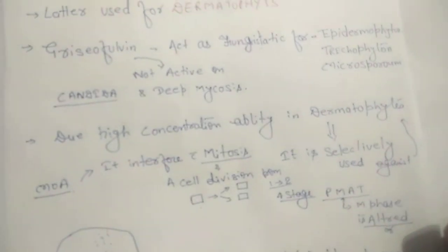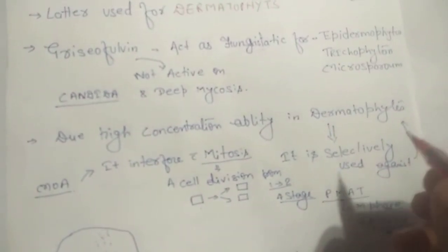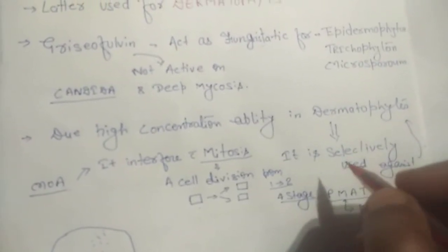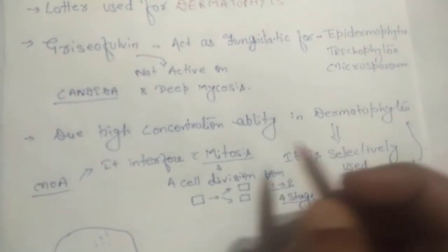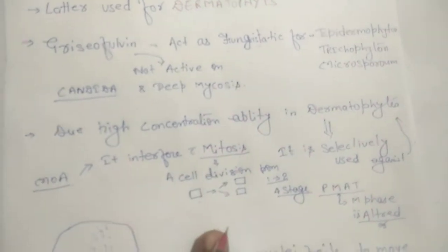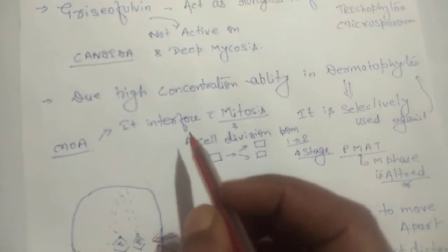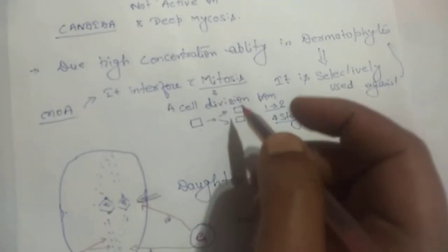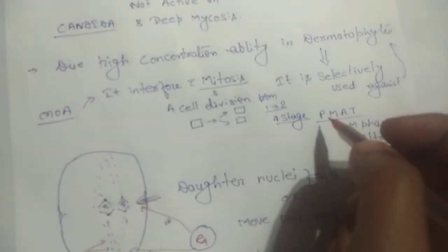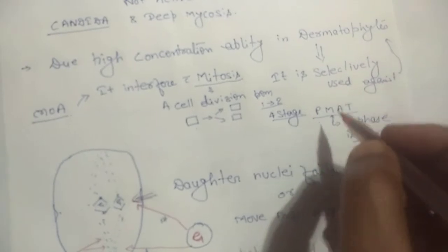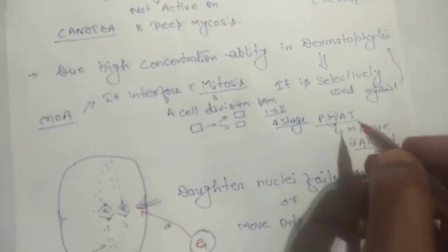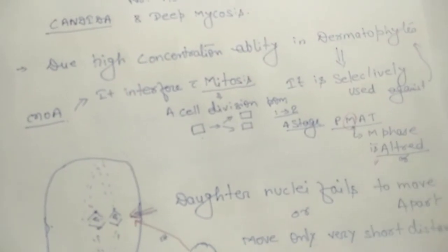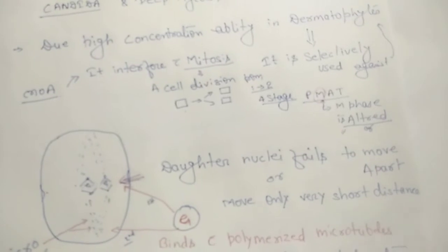Where tinea infection occurs in the skin or dermatophytes, griseofulvin is highly selective for the dermatophytes. That's why it is used against dermatophytes. The mechanism of action: griseofulvin interferes with mitosis, which is cell division from one cell to two cells. The stages of cell division are prophase, metaphase, anaphase, and telophase. In the M-phase, that is the metaphase stage, griseofulvin acts and alters the metaphase stage.